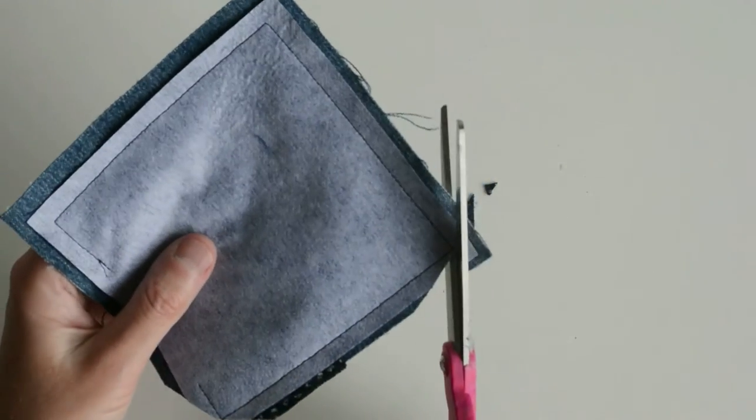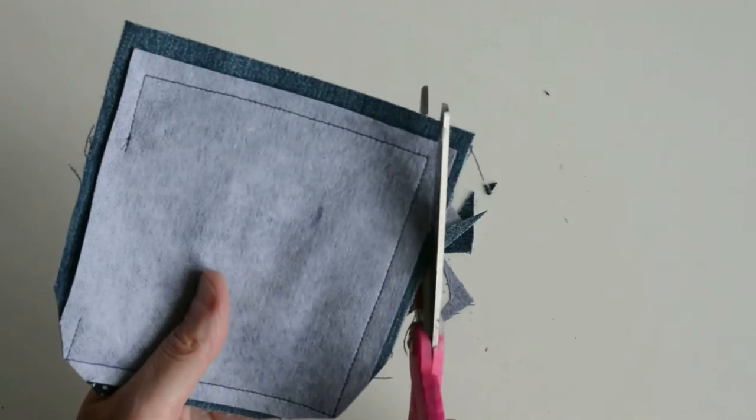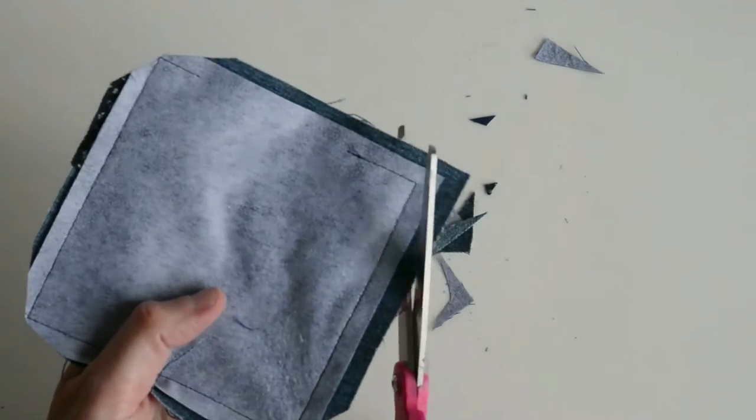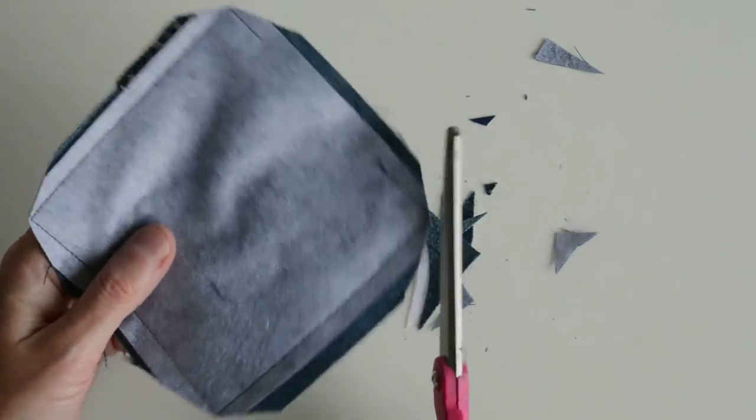You can see how I started partway down a side seam and then finished partway down the same seam, leaving 3 inches turning gap. Trim your seam allowance and your corners, being careful not to snip the actual stitches themselves.